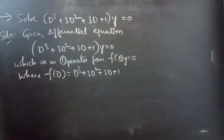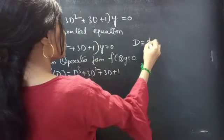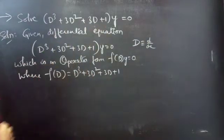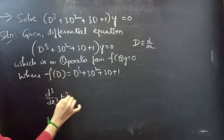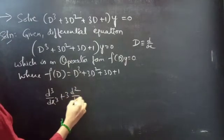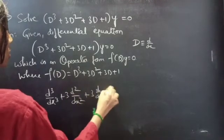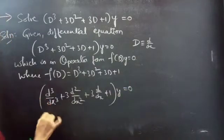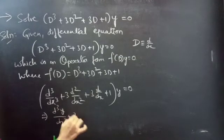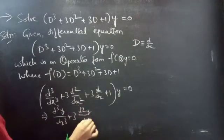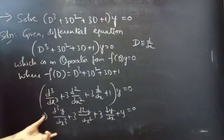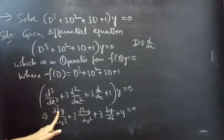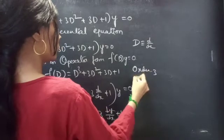Now we will write the order and degree of the given differential equation. We know that D represents d/dx. So we can write the given equation as d³y/dx³ + 3·d²y/dx² + 3·dy/dx + y = 0. Here our highest derivative is d³y/dx³, so the order will be 3.